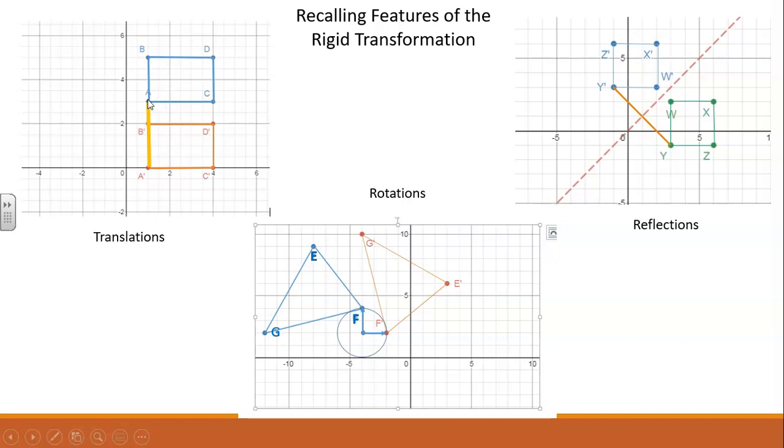In a translation, all of the points are moving the same distance in the same direction. In this example, all of the points are moving three units down.